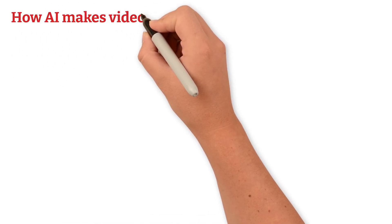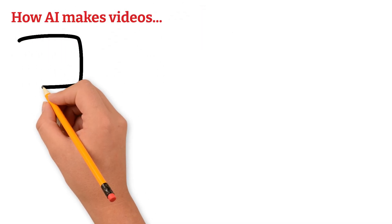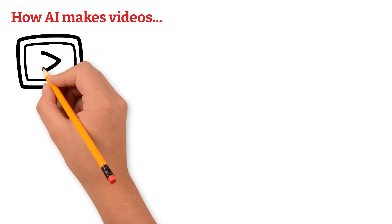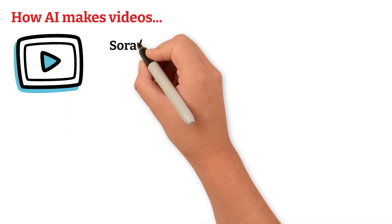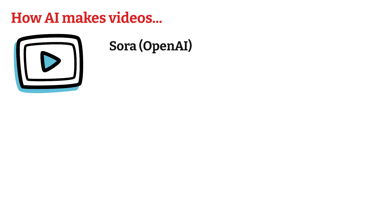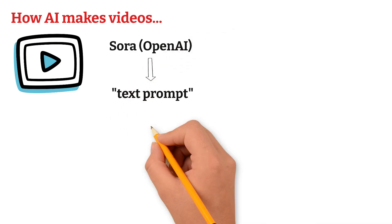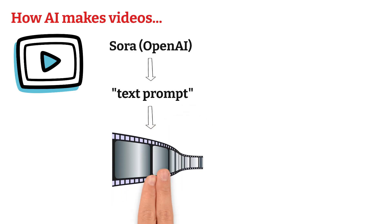How AI makes videos. Now imagine doing the same thing, but for every frame in a video. AI video tools like Sora, by OpenAI, take a text prompt and generate moving scenes, second by second, using patterns they've learned from thousands of video clips.